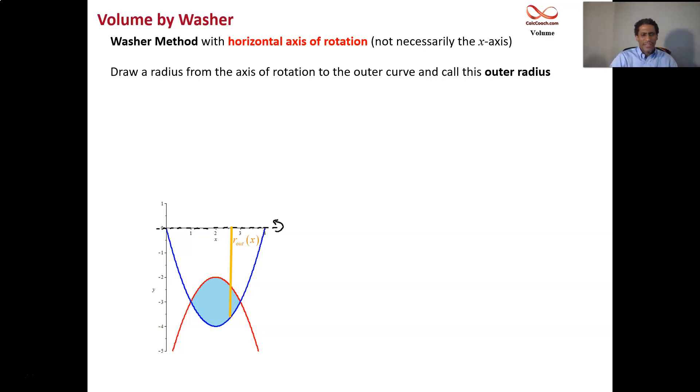But then we have to take out the middle. And so we have to subtract out the same kind of action happening where we have to find this other radius, which is the inner radius from the axis of rotation, just up to the region, just up to the inner curve, represented by this purple distance, r in of x, another function of x because it's a vertical slice.